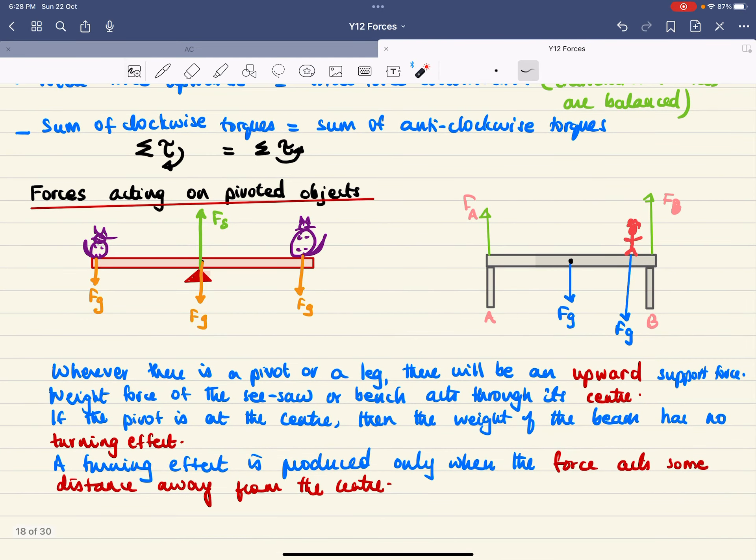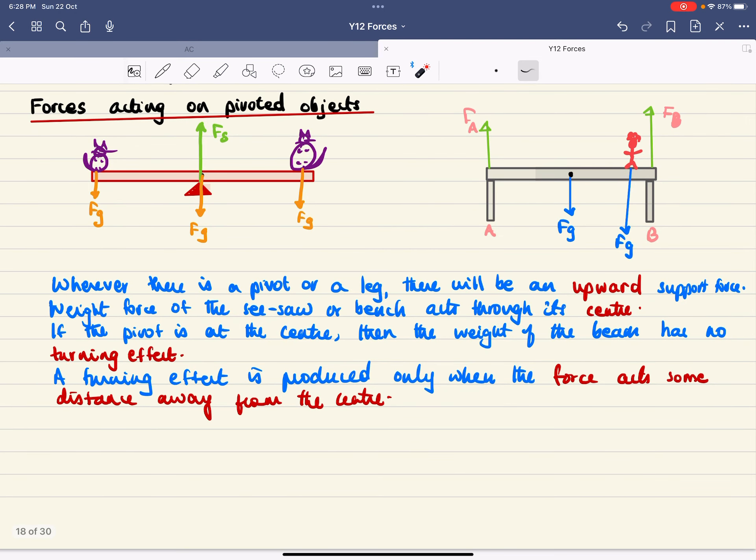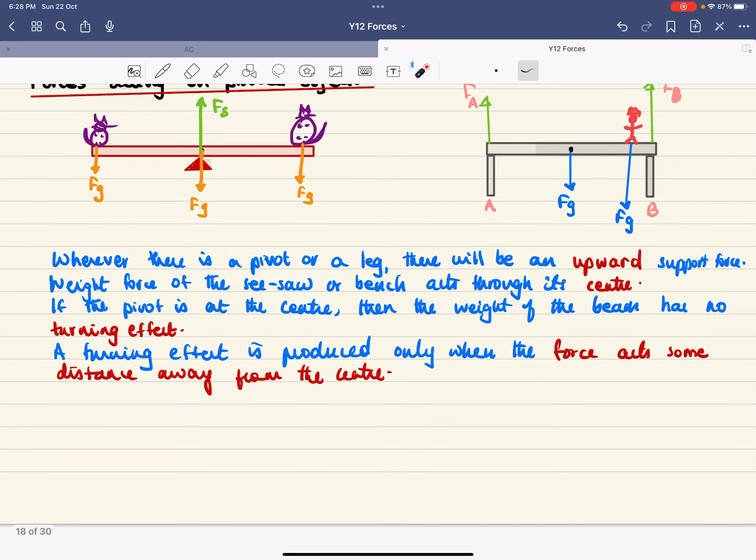Whenever there's a pivot or leg, there will be an upward support force. The weight of the seesaw or bench acts through its center if it's uniform—meaning its thickness is consistent throughout. If the pivot is at the center, the beam's weight has no turning effect. A turning effect is produced only when the force acts at some distance from the center.